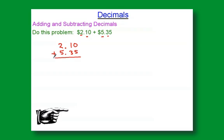Notice what we're doing here. We're keeping all the place values lined up by lining up that decimal point. So I'm adding tenths with tenths, hundredths with hundredths, ones with ones, and that gives me an answer of $7.45.